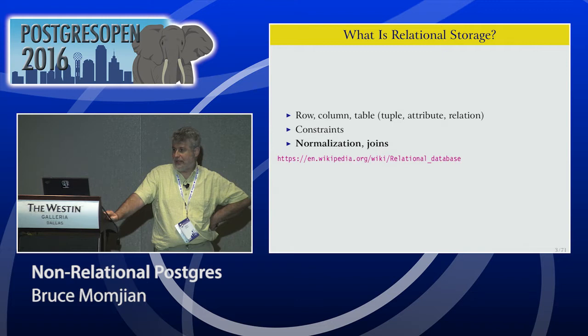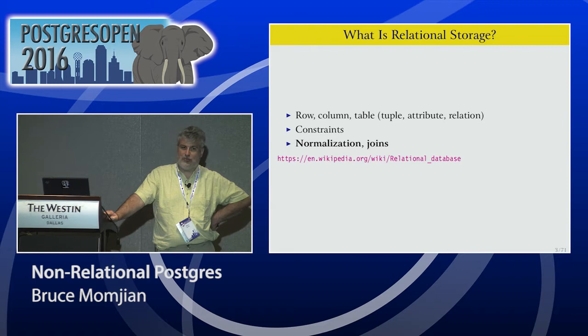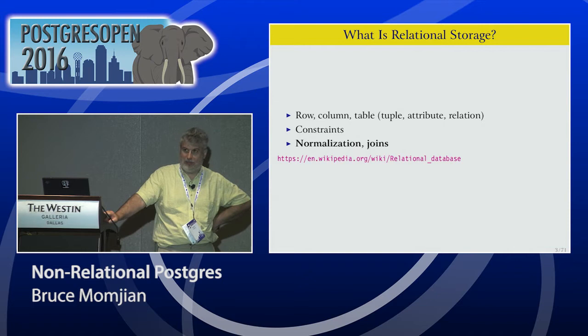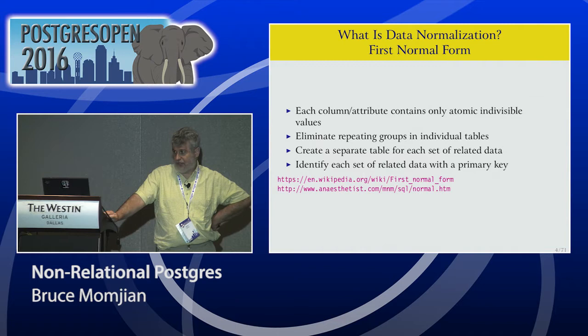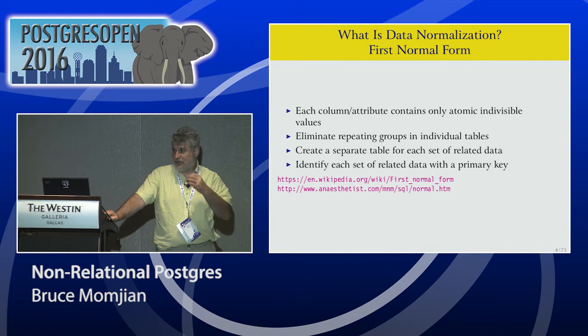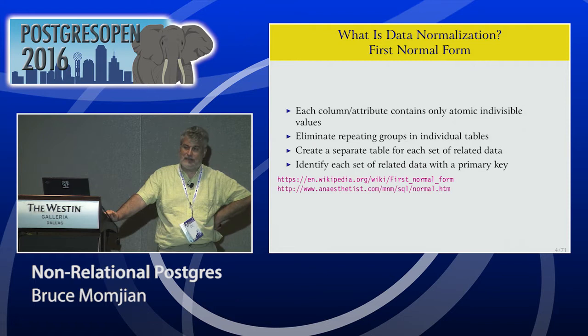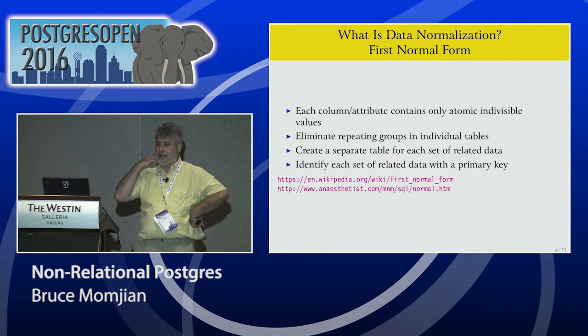So what is relational storage? Relational storage by EF Codd is basically the idea that everything is a row and a column, combined into tables with constraints. You normalize everything — first normal form, second normal form, third normal form, and so on. The first normal form effectively defines what relational storage represents: the idea that each column or attribute contains an atomic, indivisible value. You don't have repeating groups. You create a separate table for each related set of data and identify each set of data with a primary key.